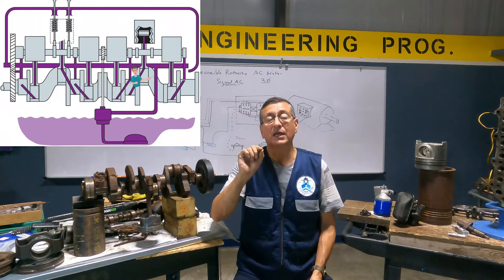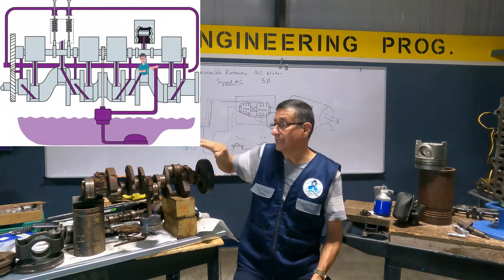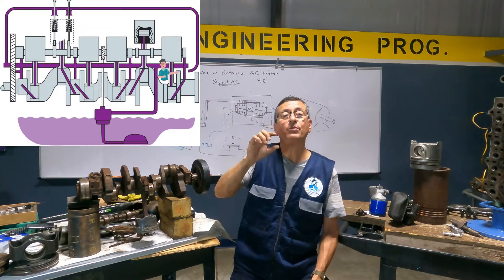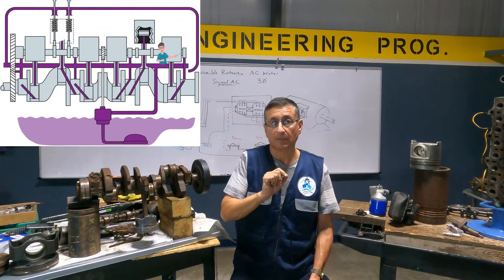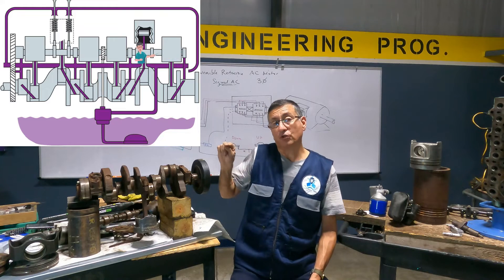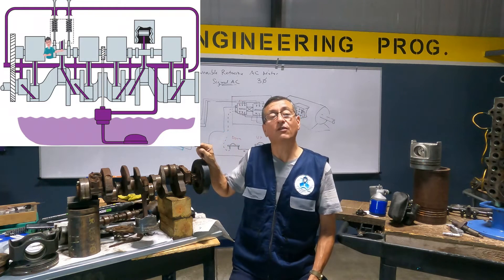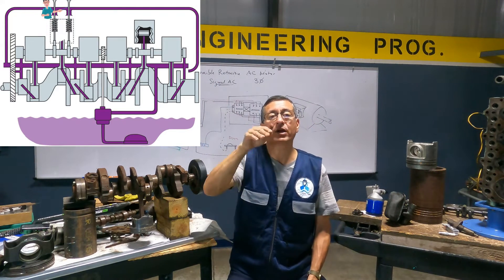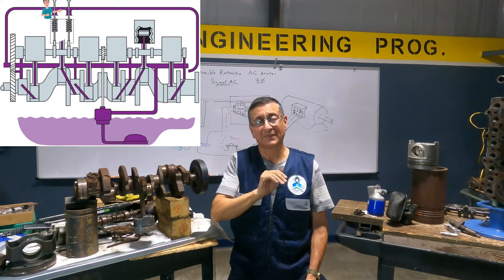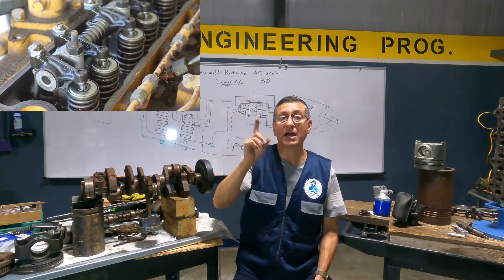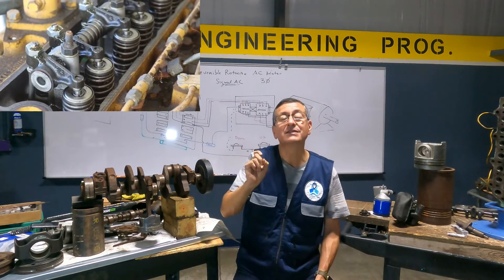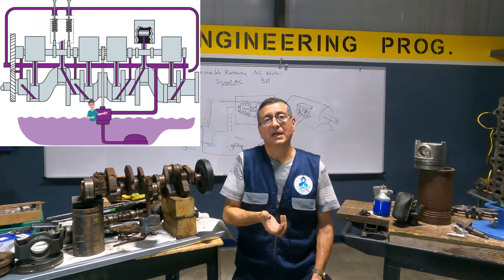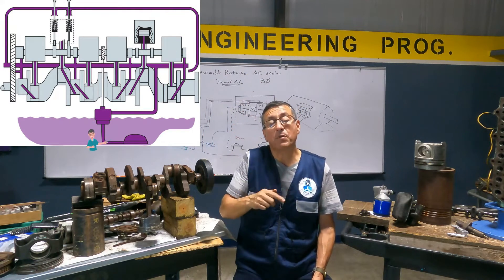We are going to continue with the path of the oil. The oil passes the crankshaft and continues up, lubricating the bearings of the crankshaft. After that, the oil passes through the oil filter and goes on top to lubricate the rocker arms. The rocker arms are lubricated, and then the oil drops by gravity into the oil pan, and the cycle starts again because the pump is pumping.